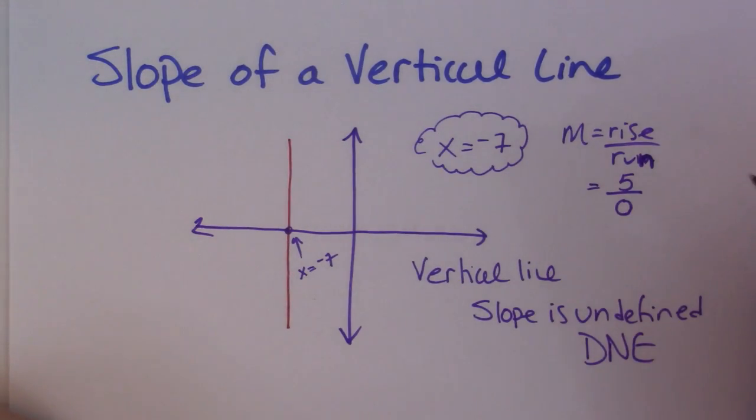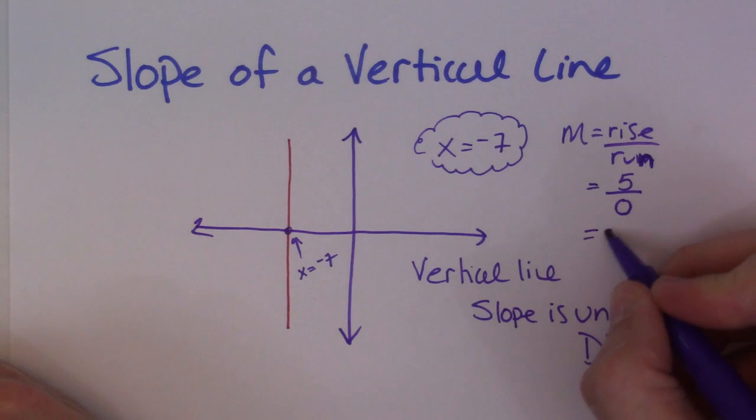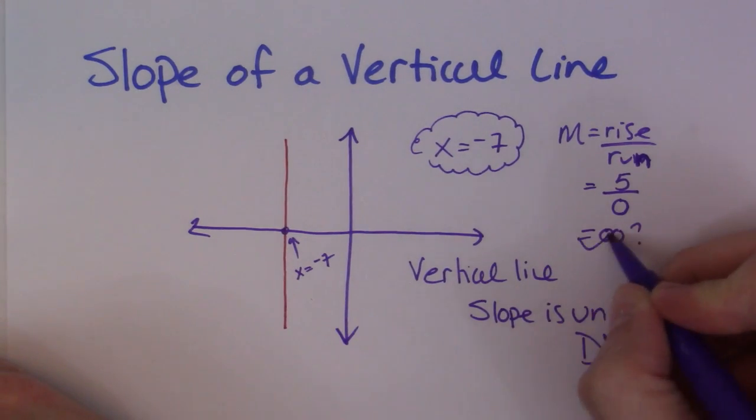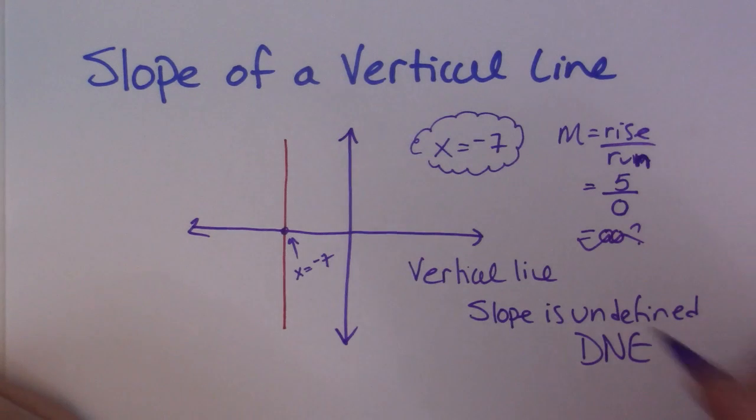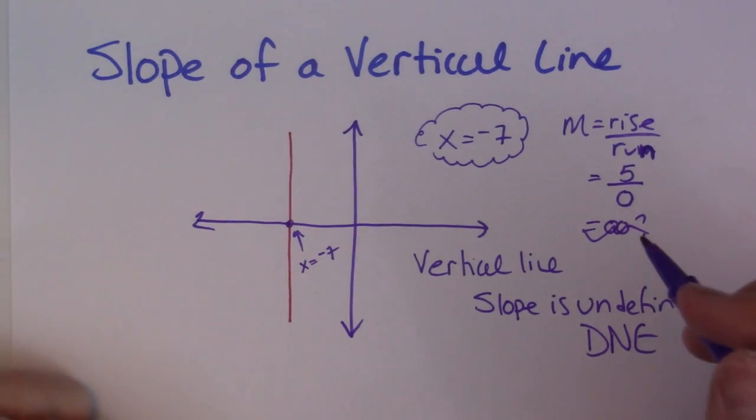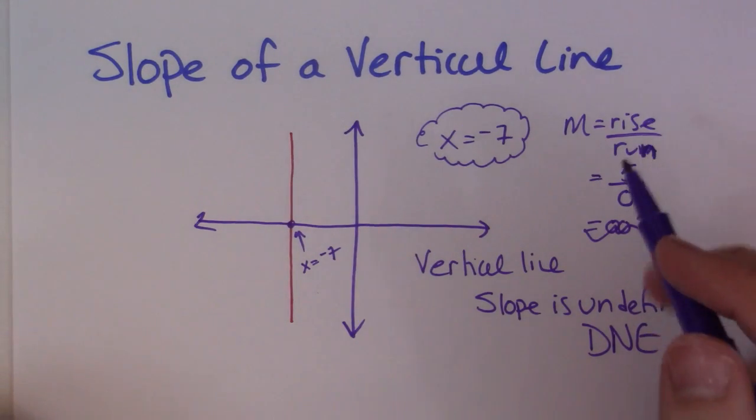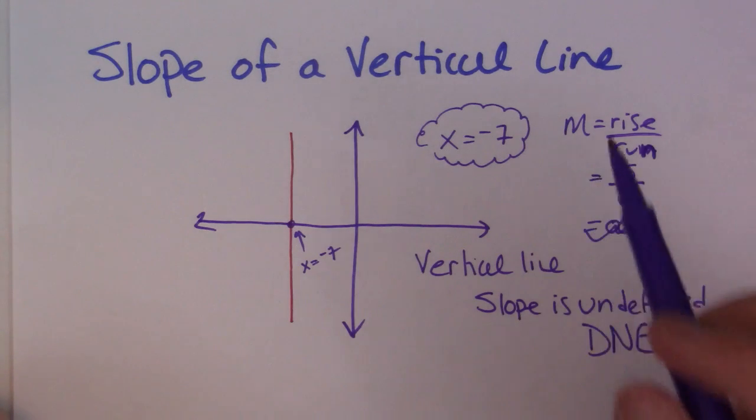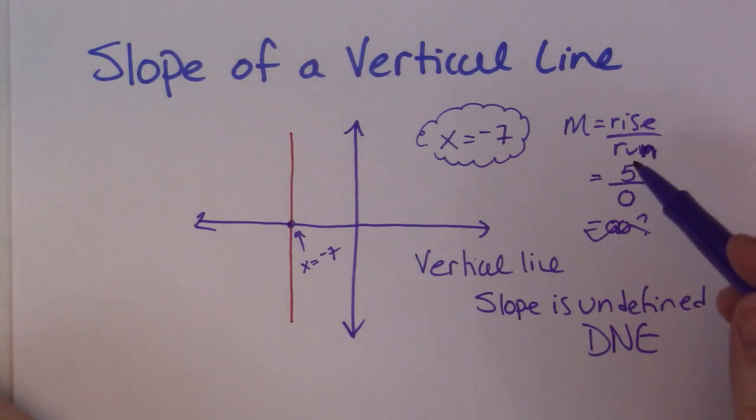And some people might use infinity for this. Now I don't use infinity for this. I say undefined or does not exist. So that's important to recognize the difference between that - a horizontal line is 0, a vertical line is undefined.